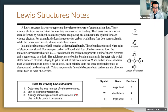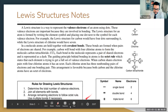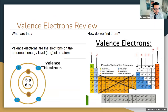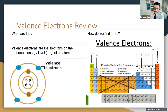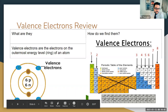Valence electrons are the electrons on the outermost energy level or ring — we saw this before with our Bohr models. We can draw the Bohr model or just look at the periodic table. Depending on what column an element is in — ignoring the middle transition group — that column number represents the number of valence electrons. Everything in the first column has one valence electron, the second column has two, and so on.